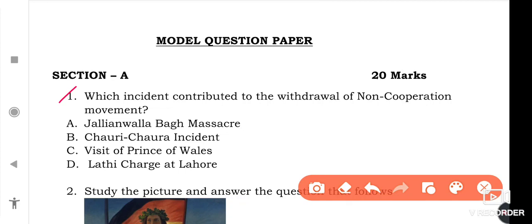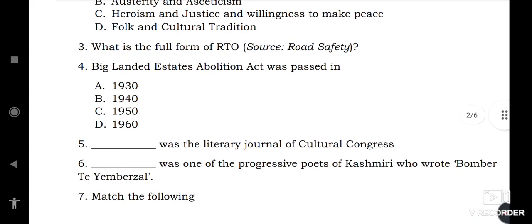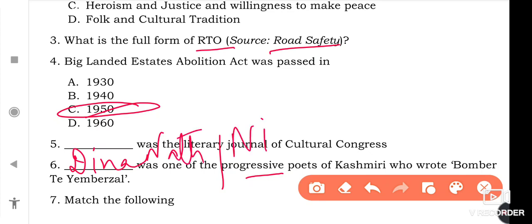So the first objective is: Which incident contributed to the withdrawal of non-cooperation movement? This is very easy, that is Chauri Chaura incident. Next will be: What is the full form of RTO? I've told you this in previous videos, it is Regional Transport Office. Big Landed Estates Abolition Act was passed in 1950. Then Dash was one of the progressive poets of Kashmiri who wrote Bombarti Yambar Zal. It is Deena Naath Nidam.